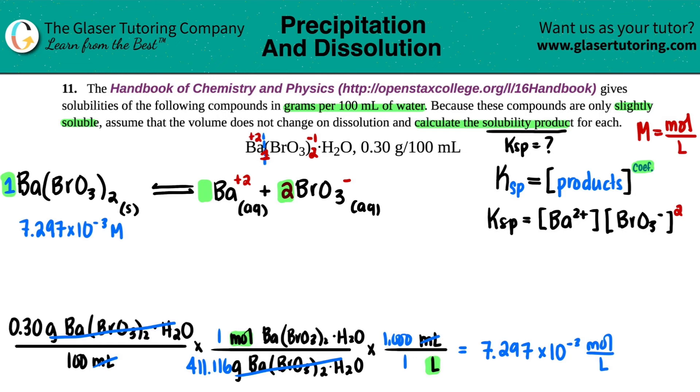But now how do I go from this molarity to the molarity of the individual ions? Well, that's when we use mole ratios in the balanced equation. There was one of your initial solid, one barium two plus, and two bromates. So since the first ratio is one to one, it's the same number. So the barium two plus would be 7.297 times 10 to the negative third molarity. And then since the second relationship is one to two, this would have to be two times the amount.